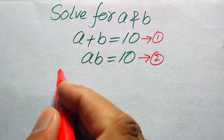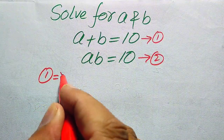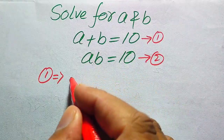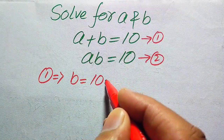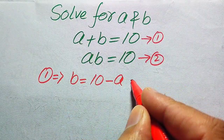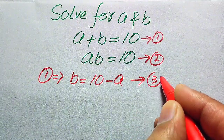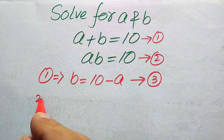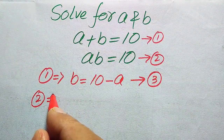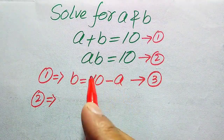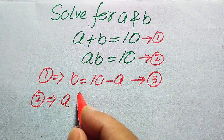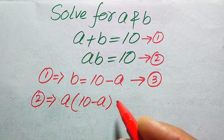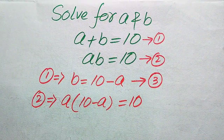First we focus on equation number one. Equation number one implies that we move a to the right hand side, so it will be written as b equals 10 minus a. We call this equation number three. We use equation number three in equation number two and rewrite equation number two as: a times (10 minus a) equals 10.